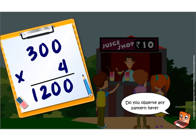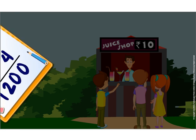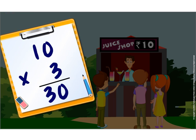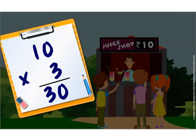Do you observe any pattern here? When we multiply numbers with multiples of 10, we multiply both numbers without zeros and then add the total number of zeros in the product.